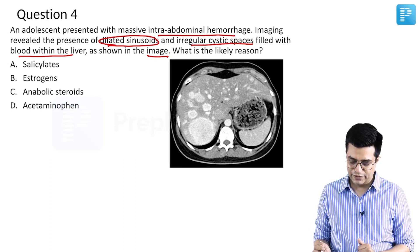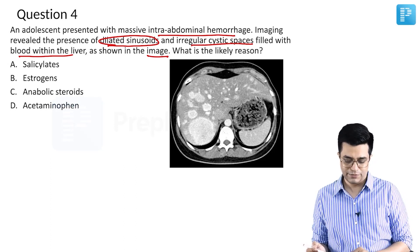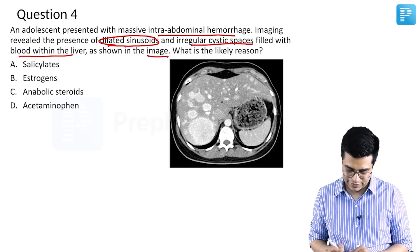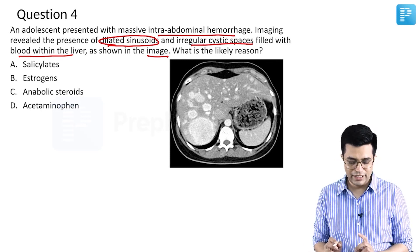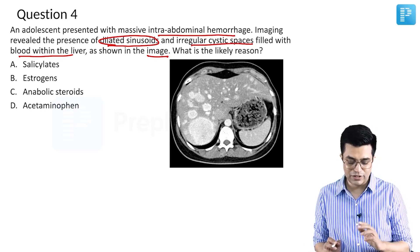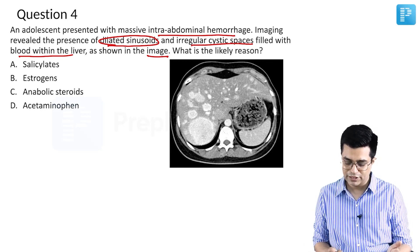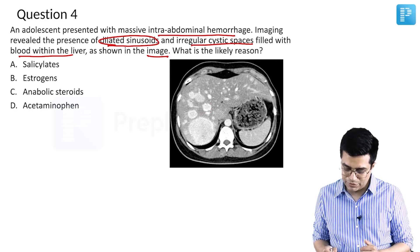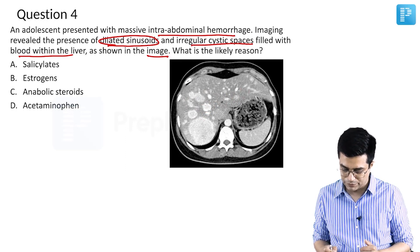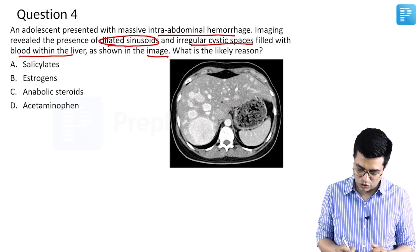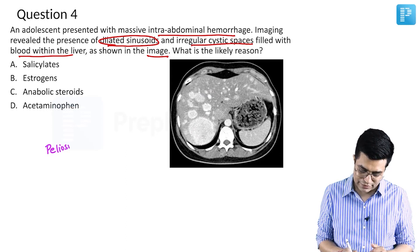The options and a CT image have been provided. As you can see in this picture, the adolescent child has presented with intra-abdominal hemorrhage and there are multiple dilated cystic lesions filled with blood in the liver. These massive lesions are a condition called peliosis hepatis.